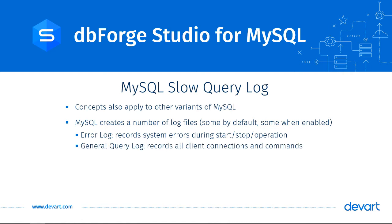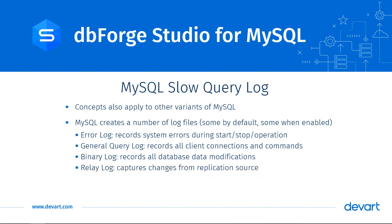The general query log records all client connections and commands run on the database instance. The binary log records all data modification commands run on the databases, and is also used for replication. The relay log captures all the changes received from a replication source server.